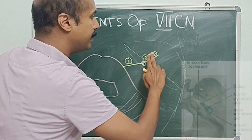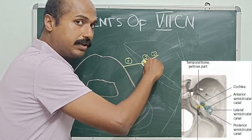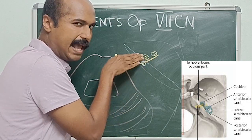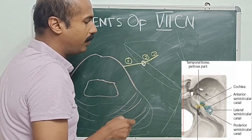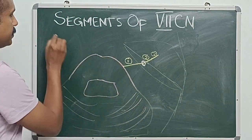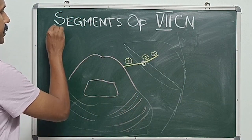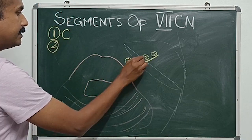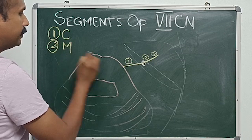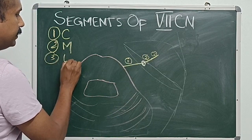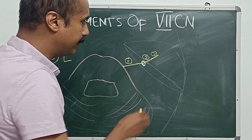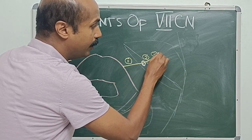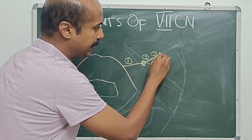The labyrinthine segment is above the vestibule. Imagine the inner ear: the cochlea is in front, the semicircular canals are behind, and the vestibule is between them. The facial nerve is above the vestibule, and that region is called the labyrinthine segment. So to summarize: one is the cisternal segment, two is the meatal segment, and three is the labyrinthine segment, which is near the inner ear.